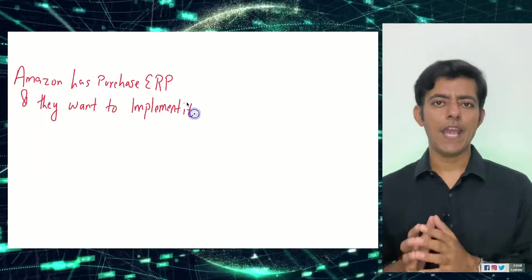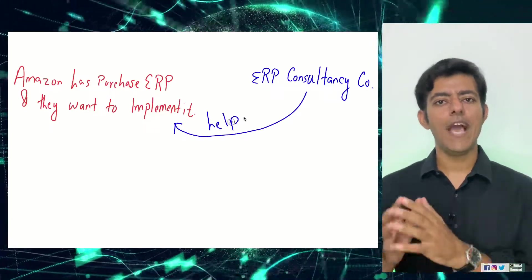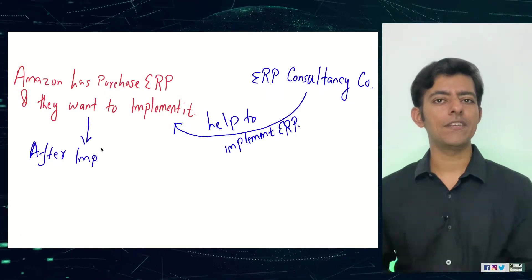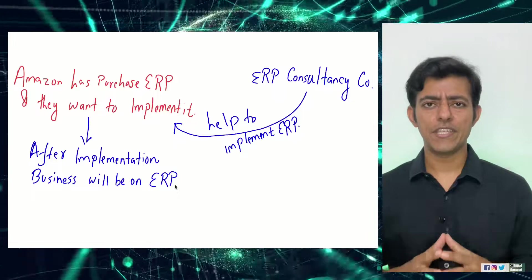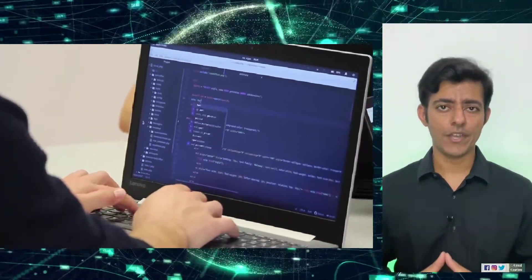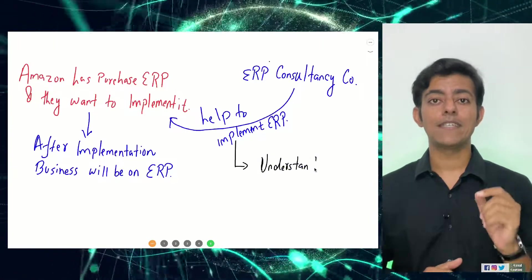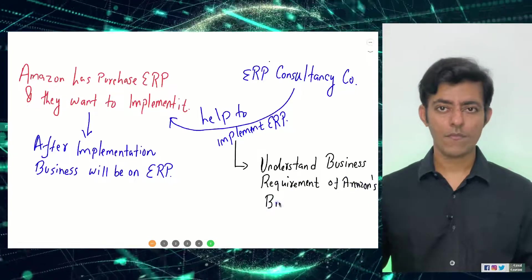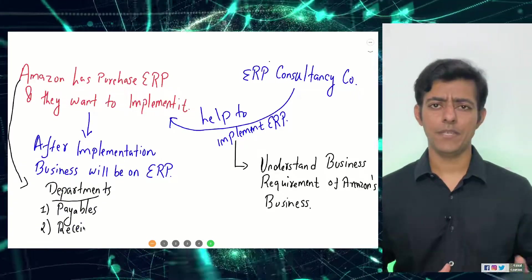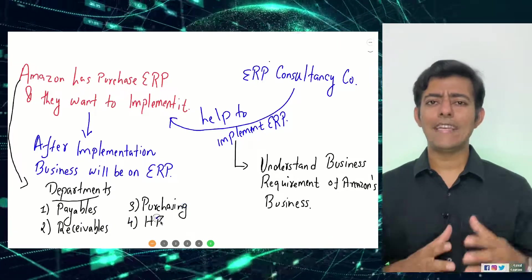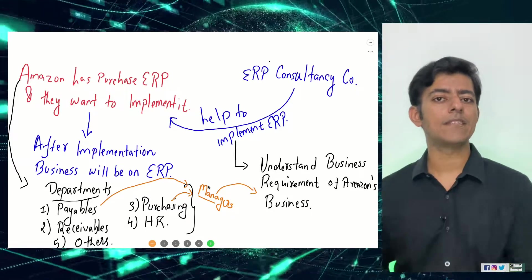Amazon has purchased Oracle ERP and wants to implement it, so they are hiring an ERP consultancy company. This ERP consultancy company will help Amazon implement the ERP, and after implementation Amazon's business will be running on ERP software. The first thing is that Amazon wants to run their business on this ERP software, so the ERP consultancy company first has to understand their business requirements. In Amazon there will be various departments like payables, receivables, purchasing, HR, supply chain management, and so on, and each department will have managers who will meet with the ERP consultancy company.